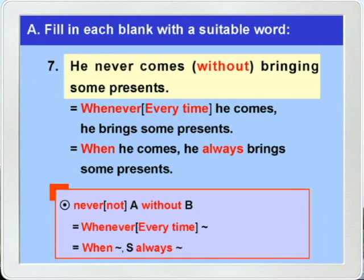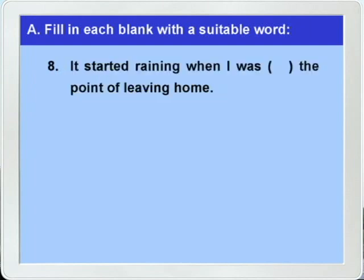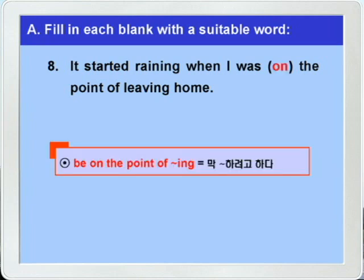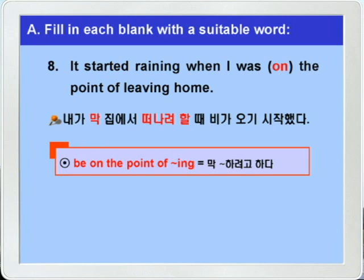8번으로 가죠. 정답은 of를 쓰면 되겠습니다. 그래서 'be on the point of -ing' 하면 '막 뭐뭐 하려고 하다' 이런 의미라고 했죠. 'It started raining when I was on the point of leaving home' — 내가 집에서 막 떠나려고 할 때 비가 내리기 시작했다 이런 말이 되겠습니다. 'be on the point of -ing'은 'be about to 부정사'로 바꿔 쓸 수 있다고 했죠.